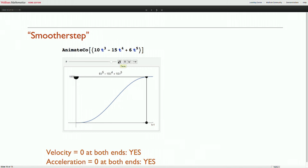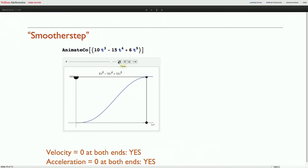It is sometimes called smoother step. And it has velocity zero at both ends, acceleration zero at both ends. So mission accomplished kind of.